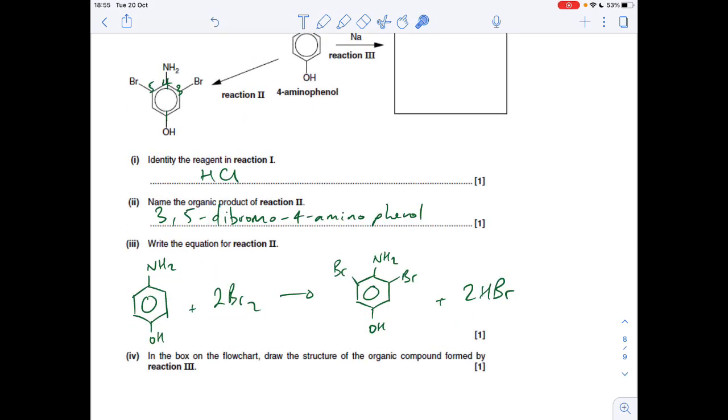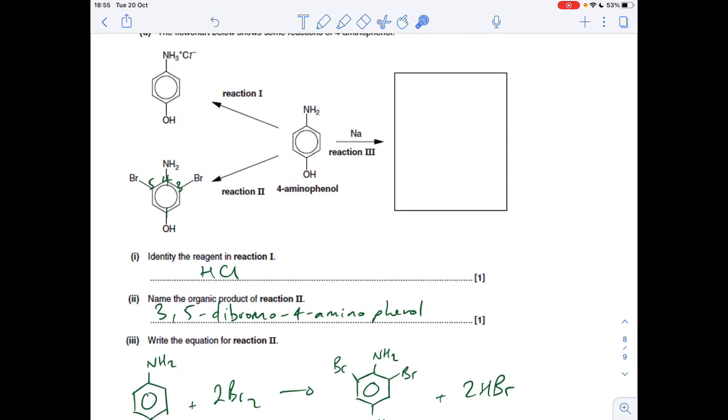And finally, we've got to draw the structure of the organic compound formed by reaction 3. So the sodium can react with the OH group. And it will create the O minus Na plus group. So NH2 up there. So O minus Na plus would be the organic product of that reaction.